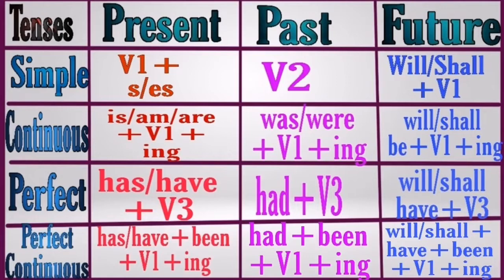So what you need to do is remember only four rules in the present tense. Once you know simple present, present continuous, present perfect, and present perfect continuous, you can form all past tense and future tense rules by simple substitution. Now let us see the rules for future tense.